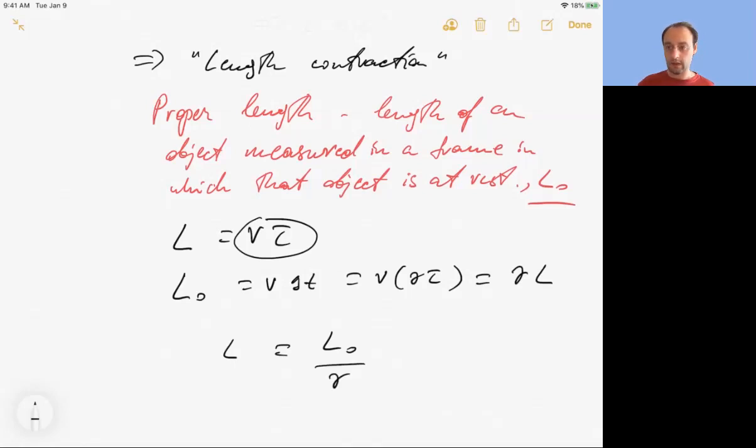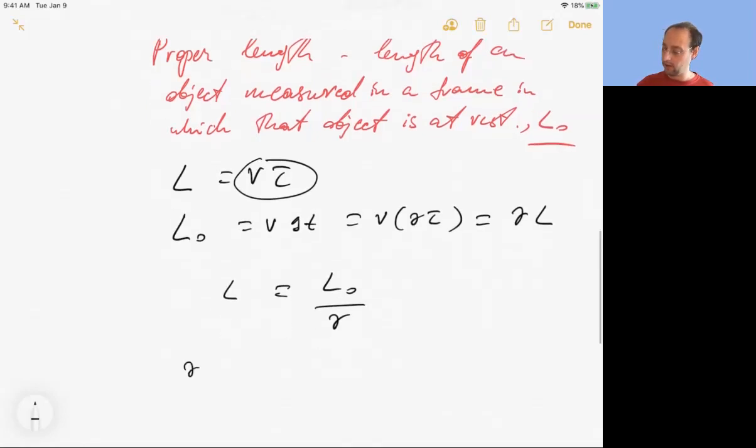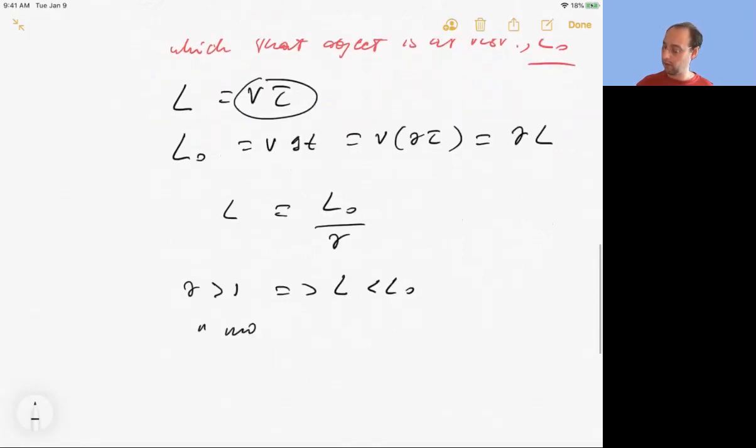L equals L naught over gamma. Now gamma is bigger than one. So L is less than L naught. And so this is moving objects are contracted.